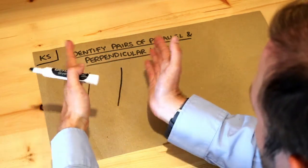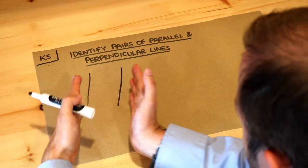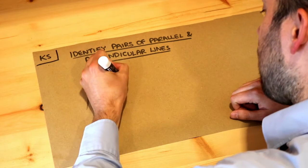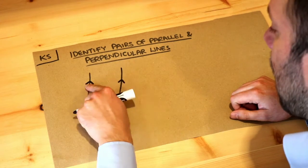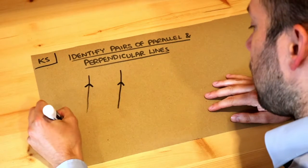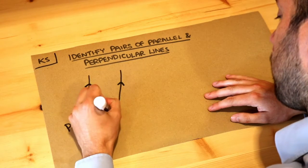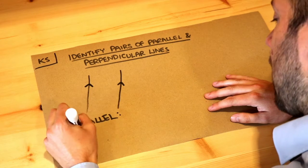So they're not going towards each other, not going further away from each other, they're just going in exactly the same direction. And we can put a little arrow on both to indicate that these are parallel. Let's spell that for you: these lines are parallel, which means they're going in the same direction.